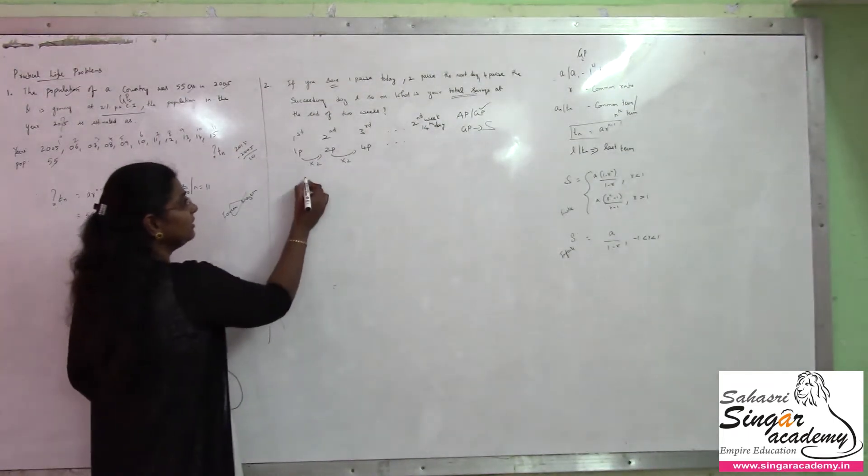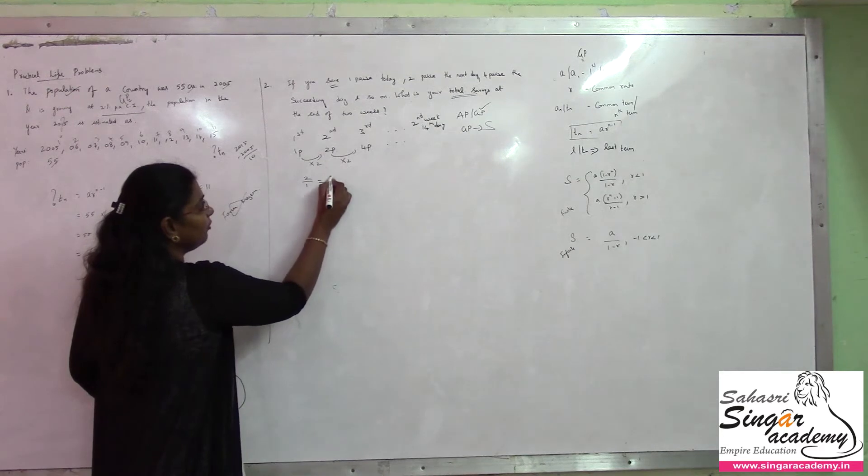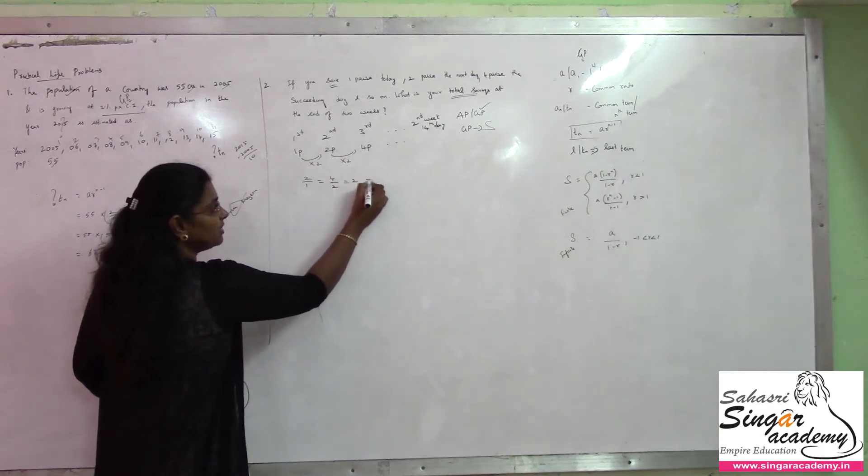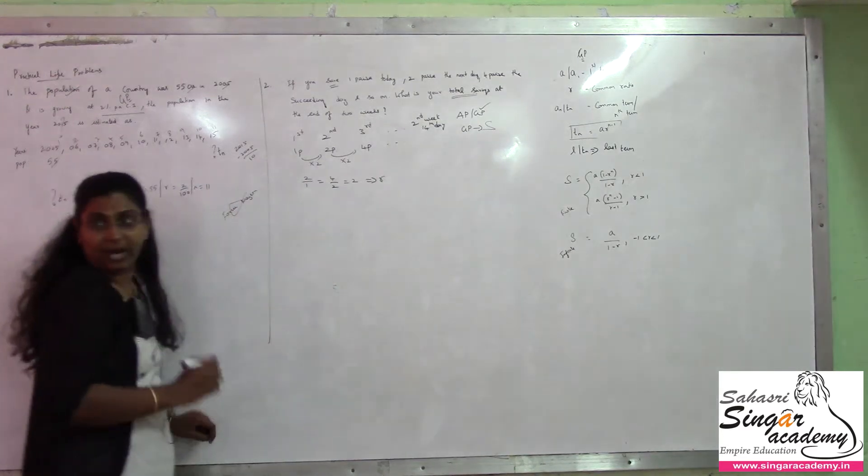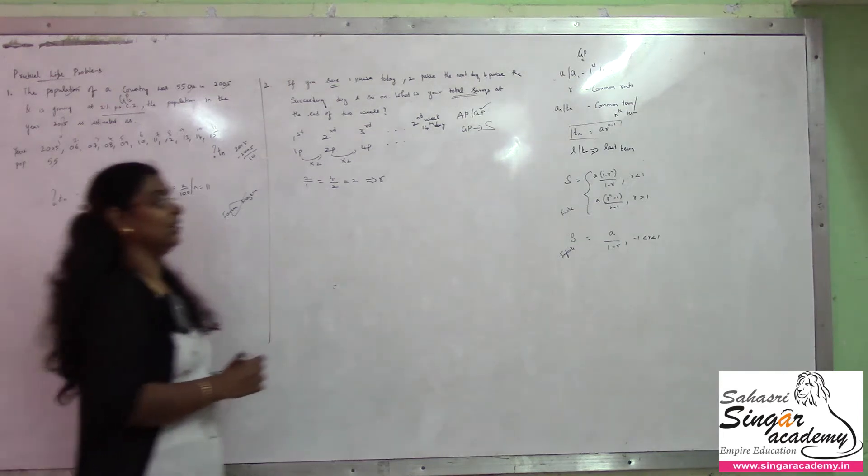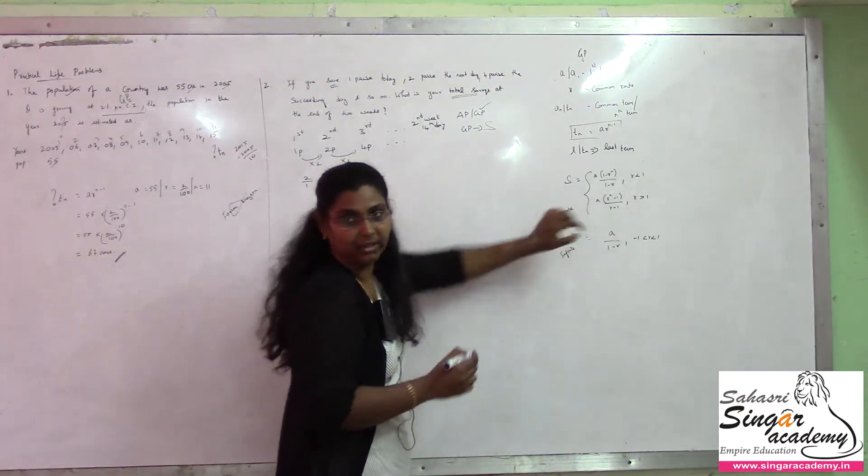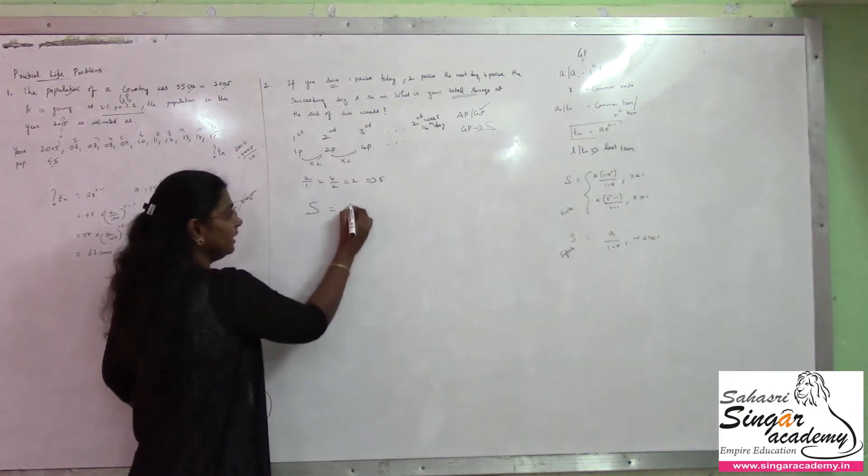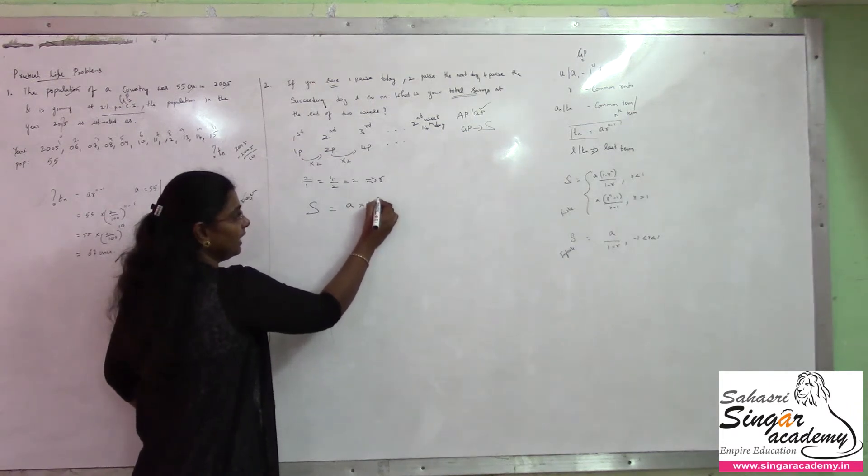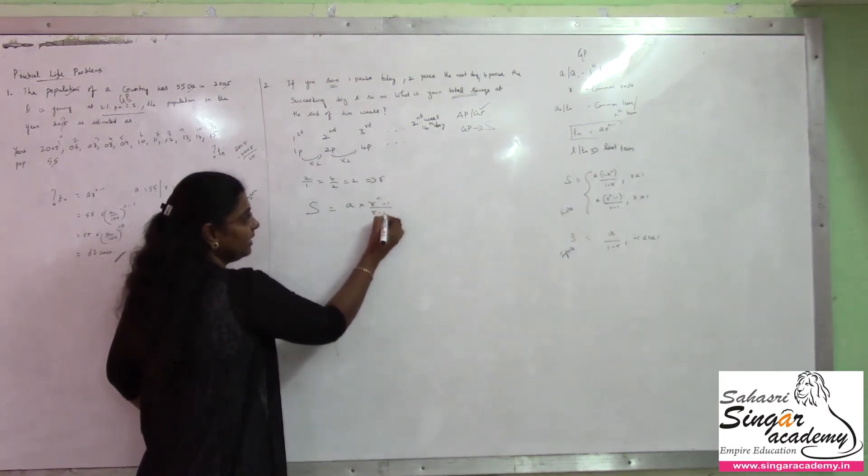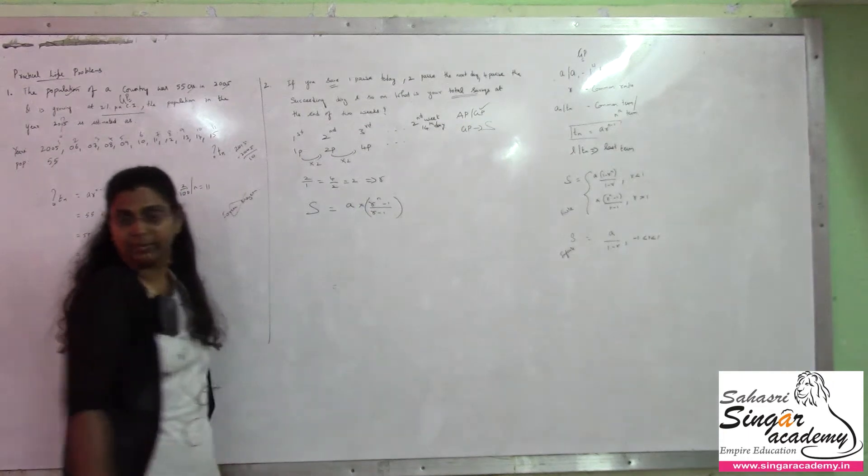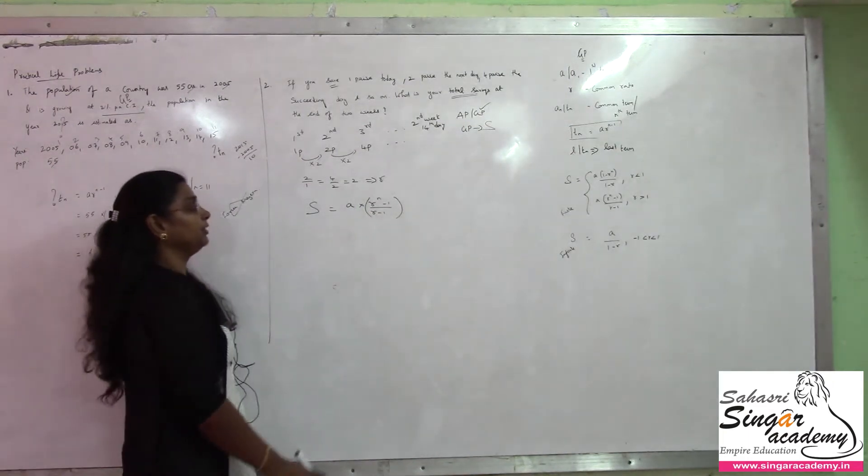First, r is 2 by 1 or 4 by 2 which is equal to 2. This value is r here. So, r has a value greater than 1. We will go for using this formulae. Okay. So, S is a into r power n minus 1 divided by r minus 1. So, this is my formulae with respect to sum of the geometric progression.